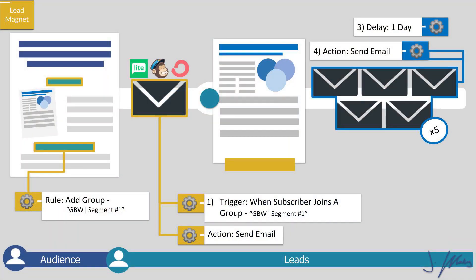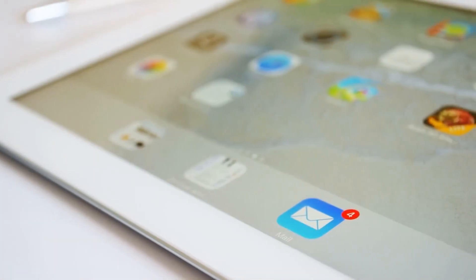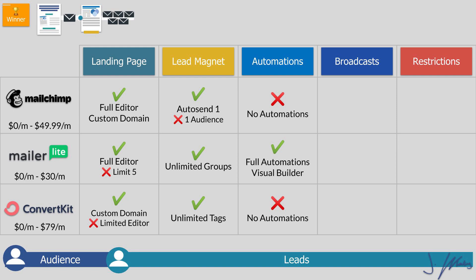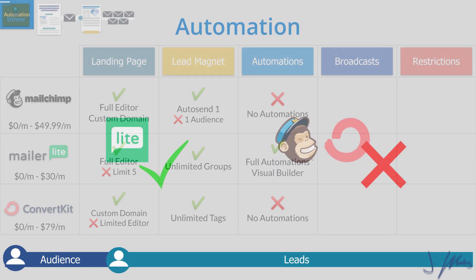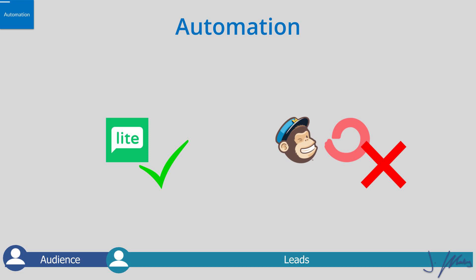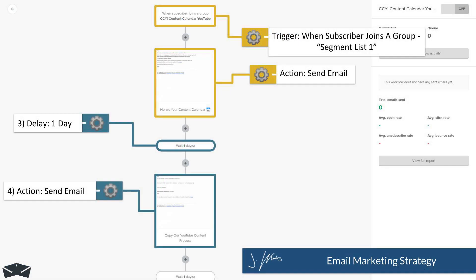Now comes the function where MailerLite really takes a huge lead: automated sequences. When you purchase email software, the expectation is that someone enters their email and you're able to send emails automatically over a specific period of time. With these free plans, MailChimp and ConvertKit do not allow you to do that. MailerLite with their free plan, however, does. So if you're looking for a solution that's going to allow you to automatically send emails — which is the core of what an autoresponder is supposed to do — MailerLite is the only one that has your back here.